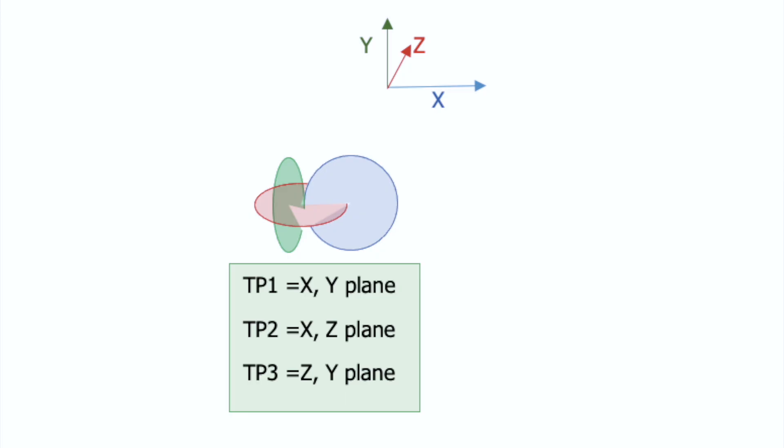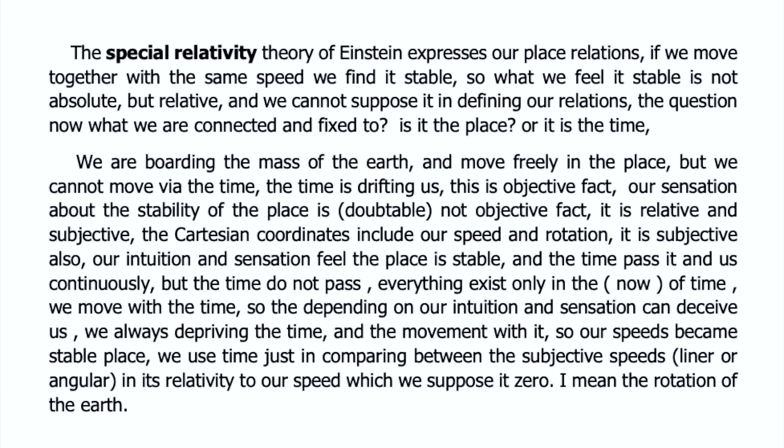We carry these Cartesian coordinates — we carry them and move and rotate them. It is not absolute, it is not objective, it is subjective. Our intuition and sensation feel the place is stable.